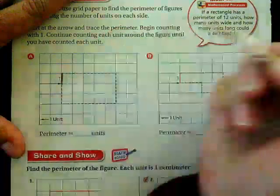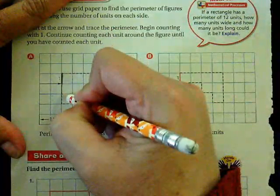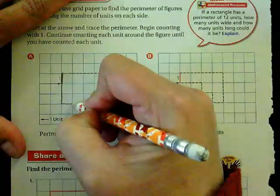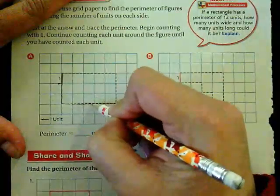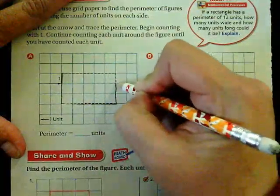So this is a unit. So we have 1, 2, 3, 4, 5, 6, 7, 8, 9, 10,